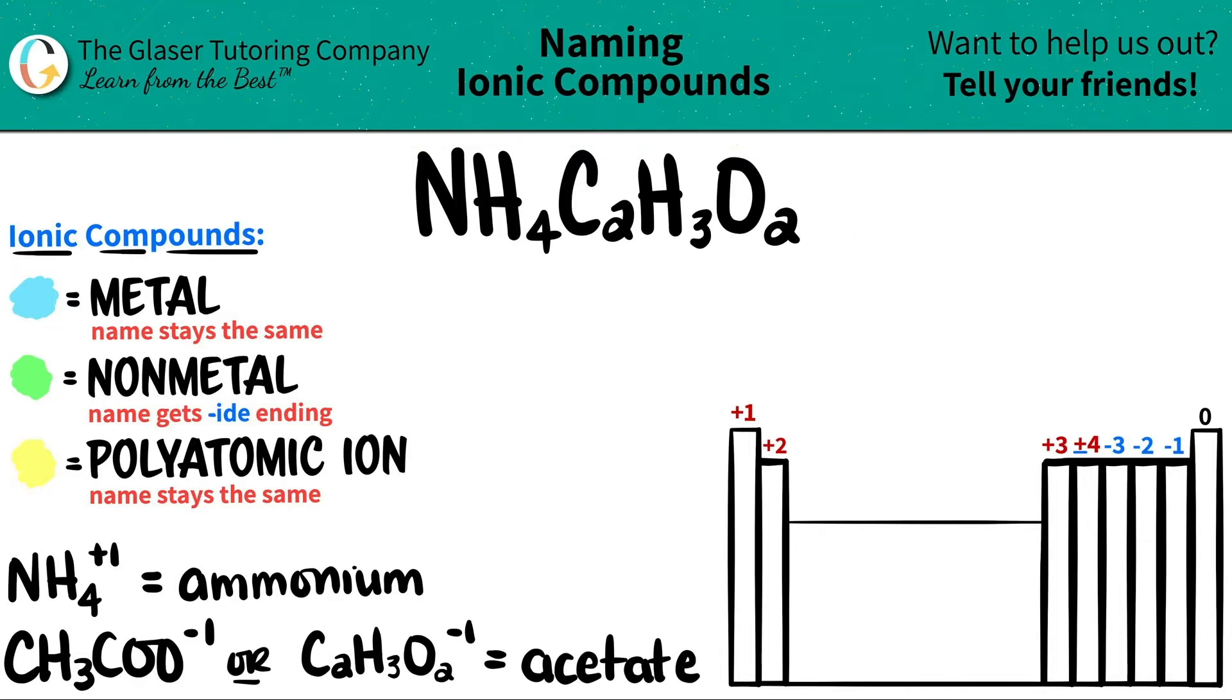Now you might say, how is this ionic, right? Shouldn't ionic compounds have metals in them? Technically nitrogen, hydrogen, carbon, and oxygen are all nonmetals.